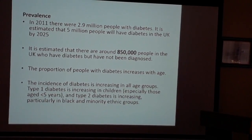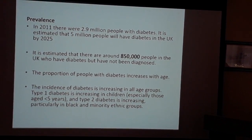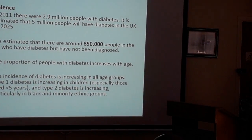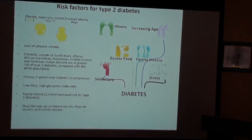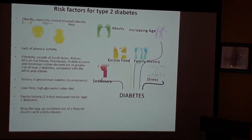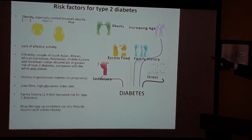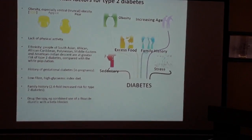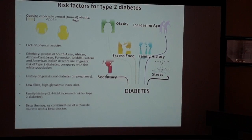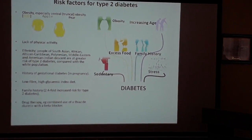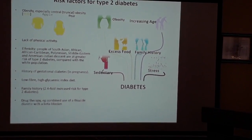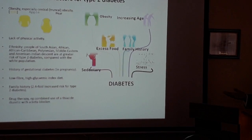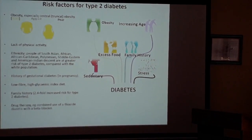Diabetes is increasing alongside obesity and lifestyle diseases. Risk factors include obesity — especially central or truncal obesity, the 'apple shape' where weight is carried between the neck and thighs — as well as lack of physical activity and certain ethnic groups. People who have had gestational diabetes are also at increased risk later in life.